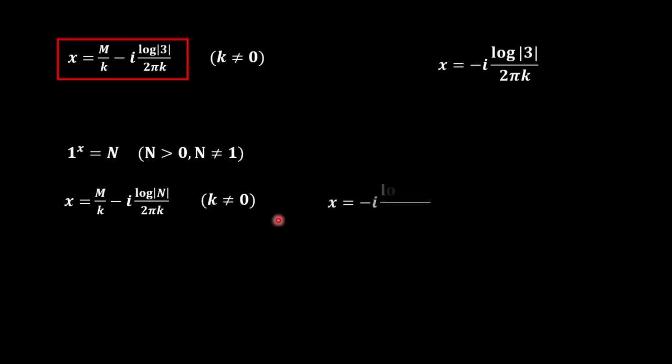The bottom line is that we have this answer for the problem with k not equal to 0. It differs from the answer which we had previously. We can generalize this answer for right-hand side equal to N where N is any number greater than 0 and not equal to 1. The answer will be the following. The difference will be just that instead of 3 we will have here N.